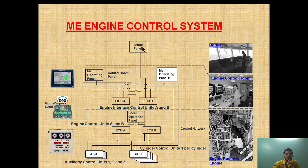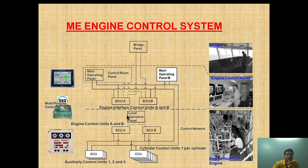This is how a command from the bridge is carried on. The bridge panel is located on the bridge. The MOP panel, EICU, and ECU — these three things are located in the engine control room. The LOP is located at the emergency platform, and the CCU is located at the individual cylinder unit.